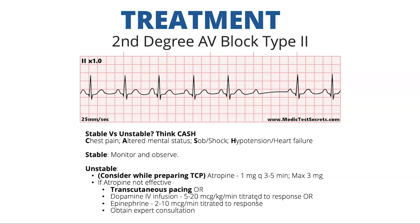Treatment for second degree type two: the difference here is you have more of a chance the patient is going to be unstable, with fewer perfusing beats. The higher level block you get into — second degree type two and third degree — the more chance you have for hemodynamic compromise. Determine whether your patient is stable or unstable. If unstable, you can consider trialing atropine while you're preparing for pacing. If you can get pacer pads on before you get an IV and give atropine, then do that. If atropine is not effective, move to pacing, dopamine, or epinephrine, then obtain expert consultation.